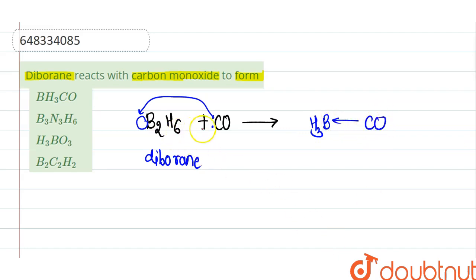So when B2H6 reacts with 2 moles of CO, formation of the 2 moles of BH3-CO adduct is formed.